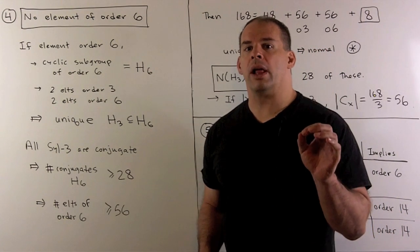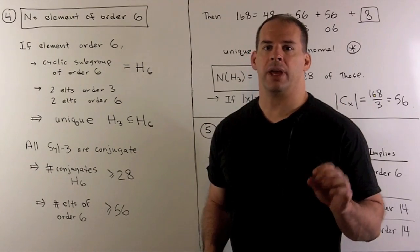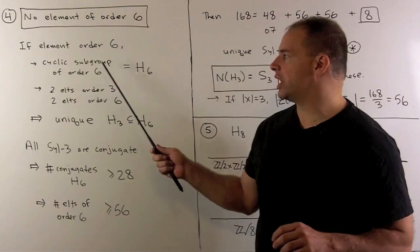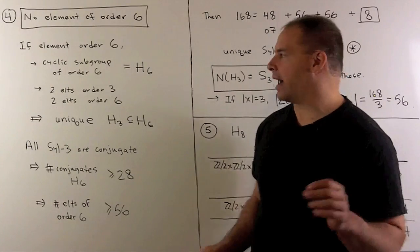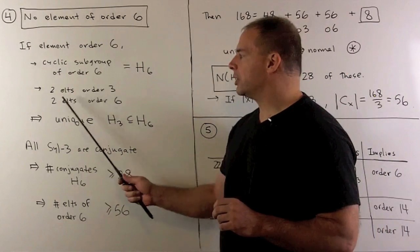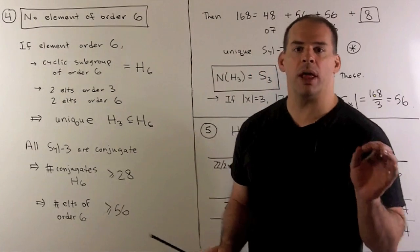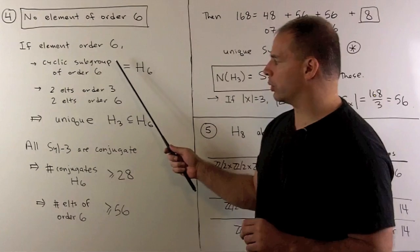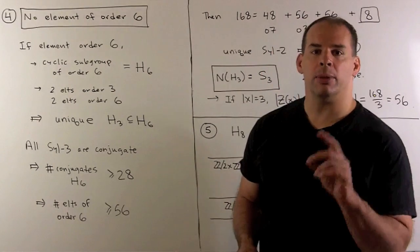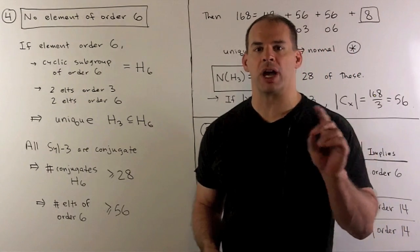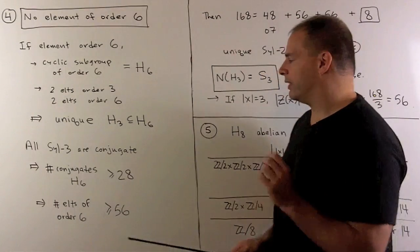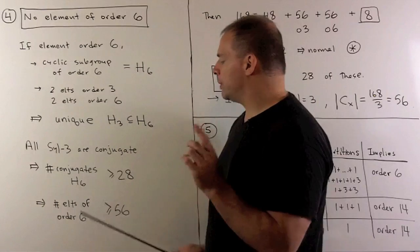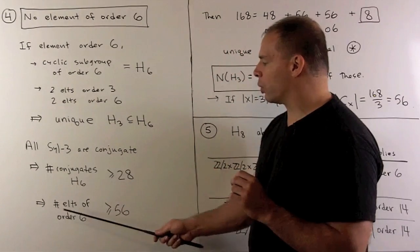Part four: there are no elements of order six. By an element of order six, it would generate a cyclic subgroup of order six, and that subgroup would have two elements of order three and two elements of order six. The two elements of order three correspond to a unique Sylow 3-subgroup in our cyclic subgroup. Because all Sylow 3-subgroups are conjugate to one another, that means we have at least 28 conjugates to our cyclic subgroup of order six, which means we have at least 56 elements of order six.